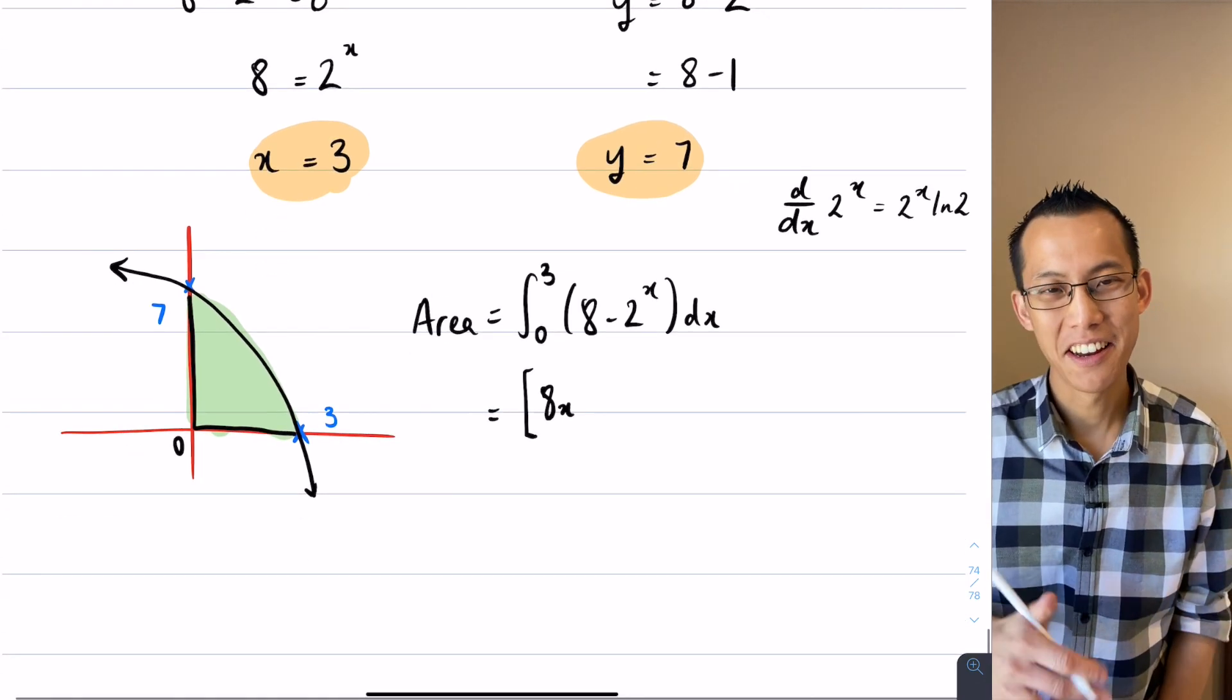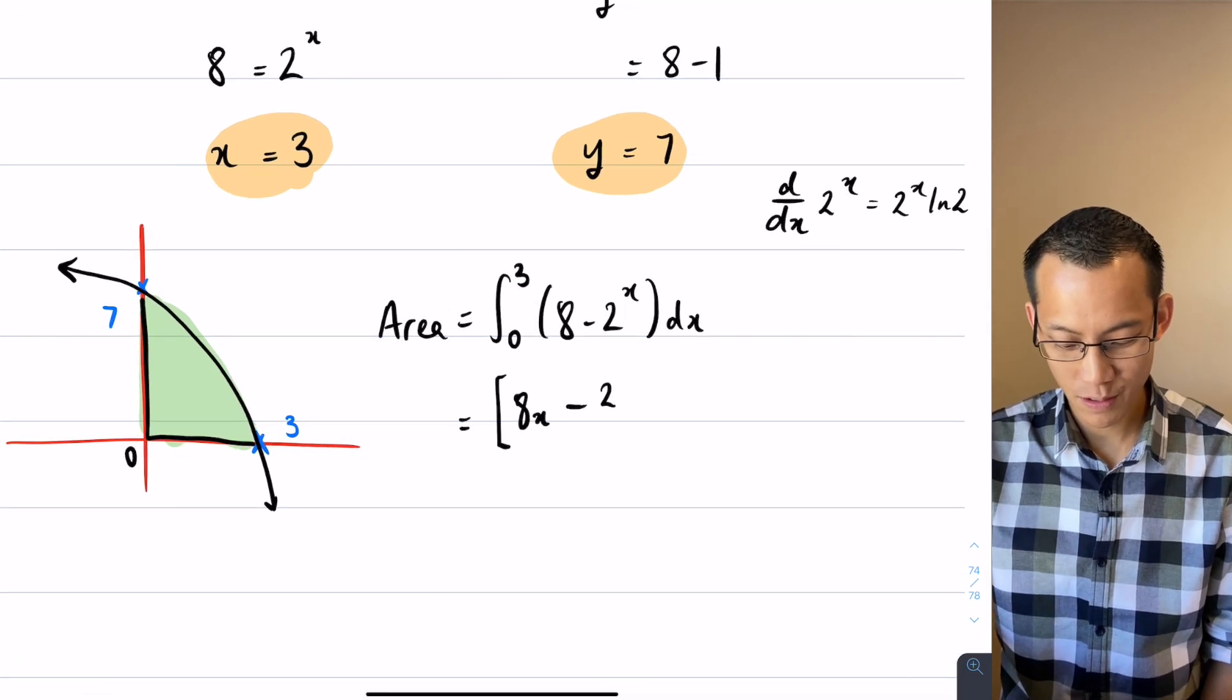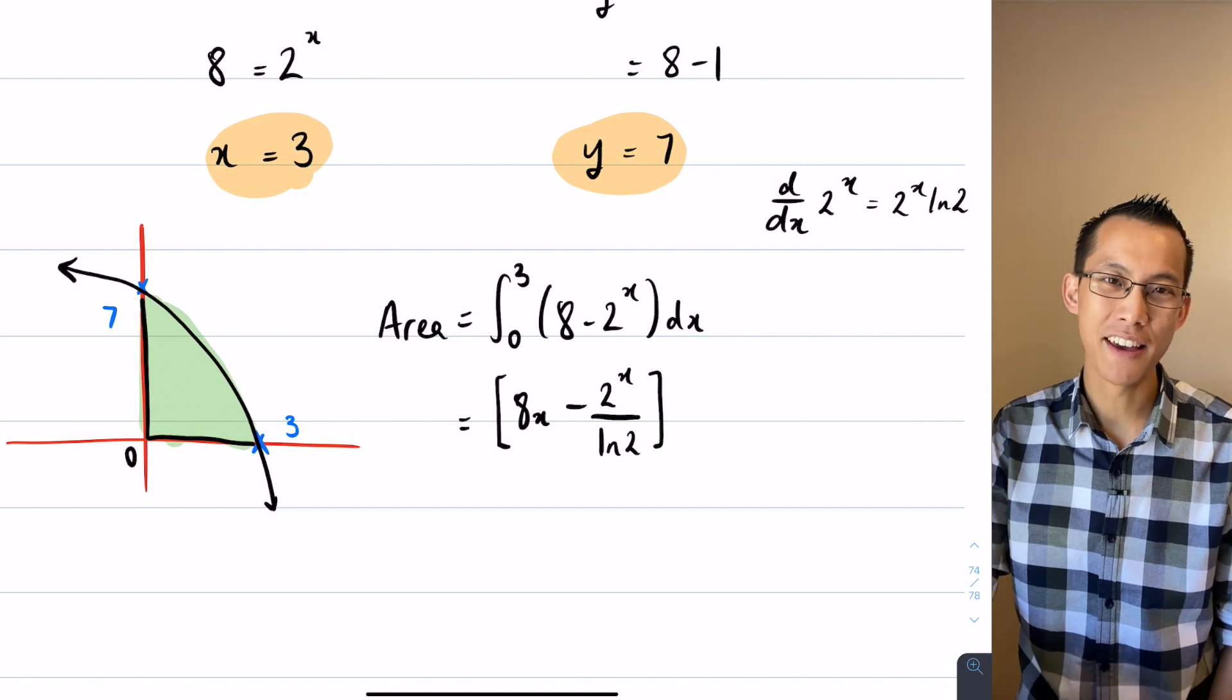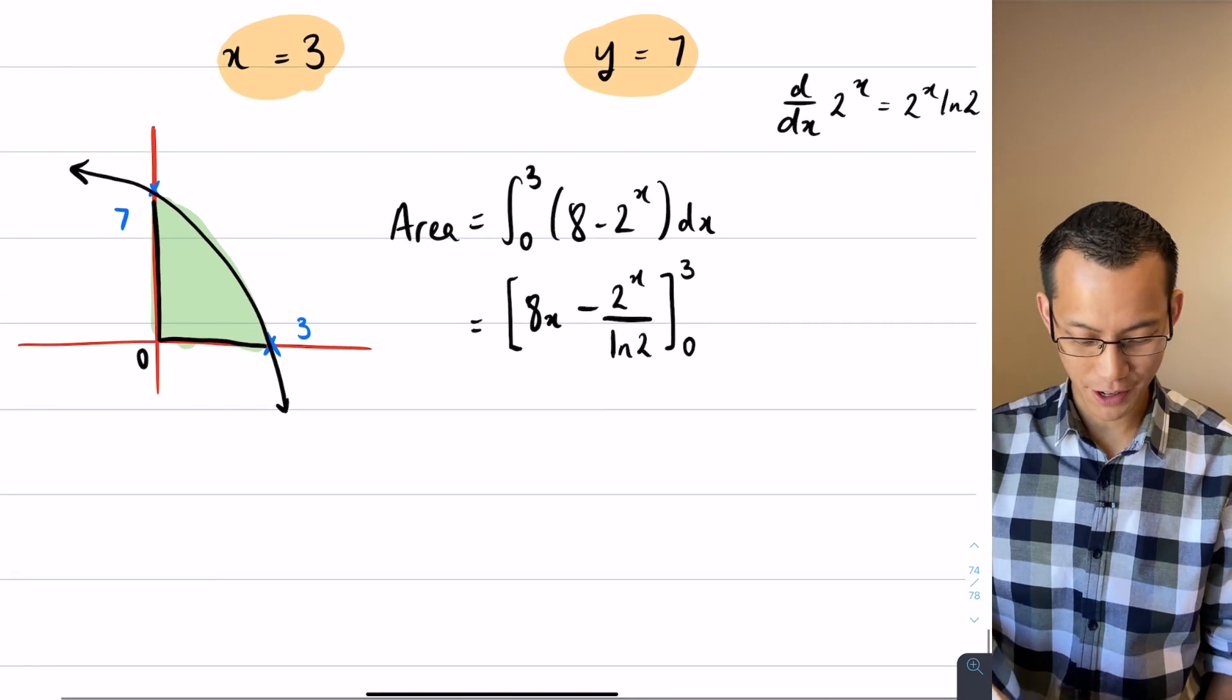Now being that we're integrating, not differentiating, instead of multiplying by log 2, I am going to divide by log 2 and that's going to give me the whole primitive function. Now we evaluate from 0 to 3 and off we go.